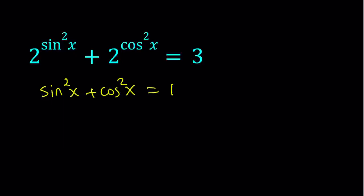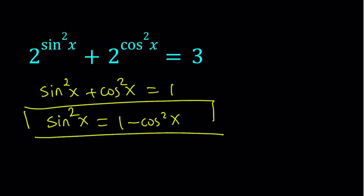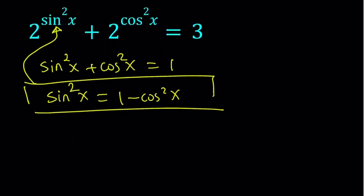So from here I can go ahead and isolate sine squared. And sine squared can be written as 1 minus cosine squared. So this is what I would like to use. I'm going to substitute this into my equation and that is going to simplify the equation. Let's go ahead and do that.